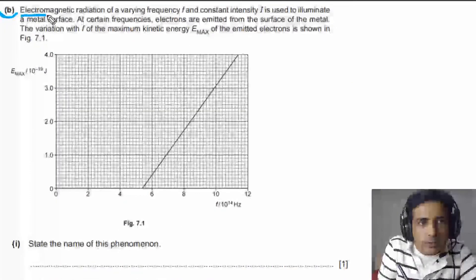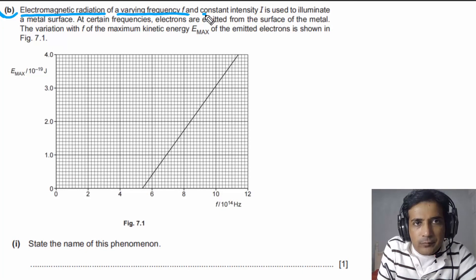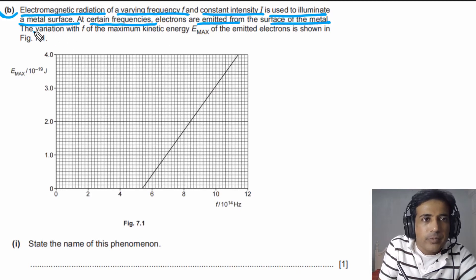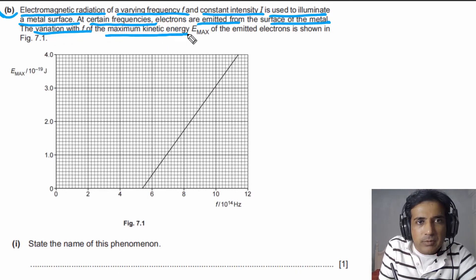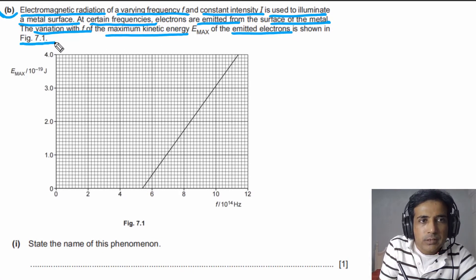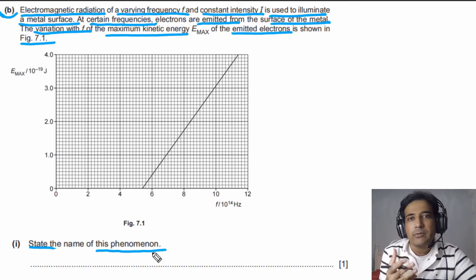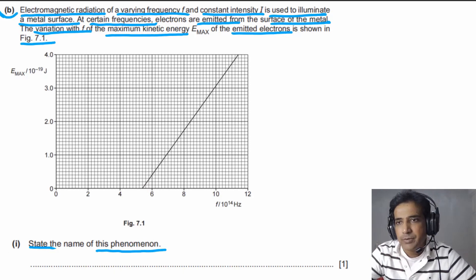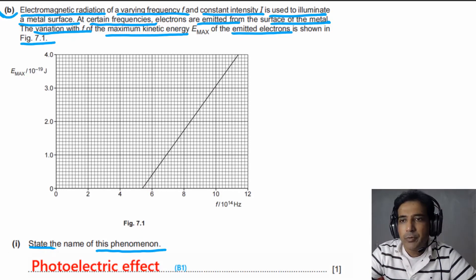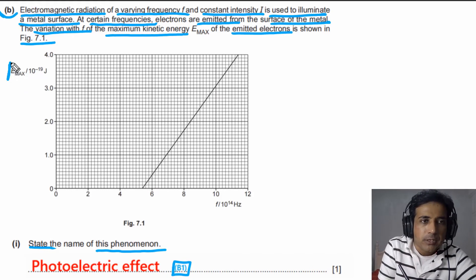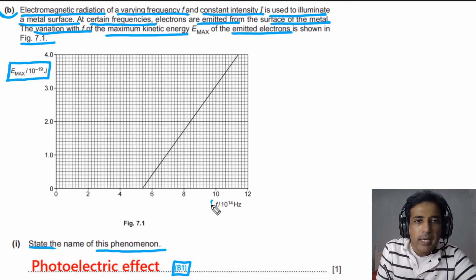For part B, electromagnetic radiation of varying frequency F and constant intensity I is used to illuminate a metal surface. At certain frequencies, electrons are emitted from the surface of the metal. The variation with F of the maximum kinetic energy of the emitted electrons is shown in figure 7.1. We need to state the name of this phenomenon — this is the photoelectric effect. Writing 'photoelectric effect' gets you one B mark.